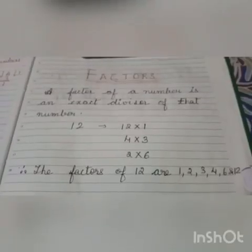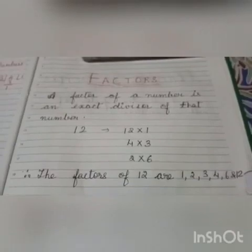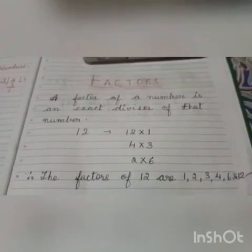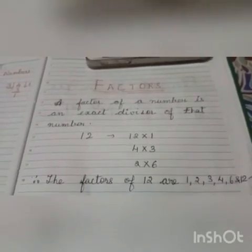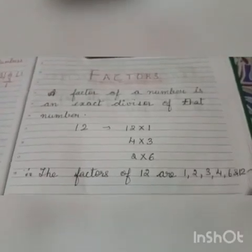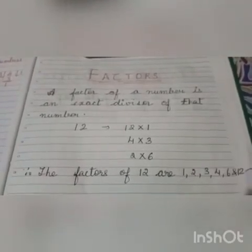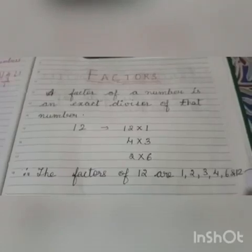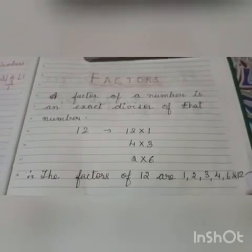Factor of a number is an exact divisor of that number. That means if a number is divided, if a dividend is divided by divisor and if you get 0 as the remainder, the divisor is the factor of that number.